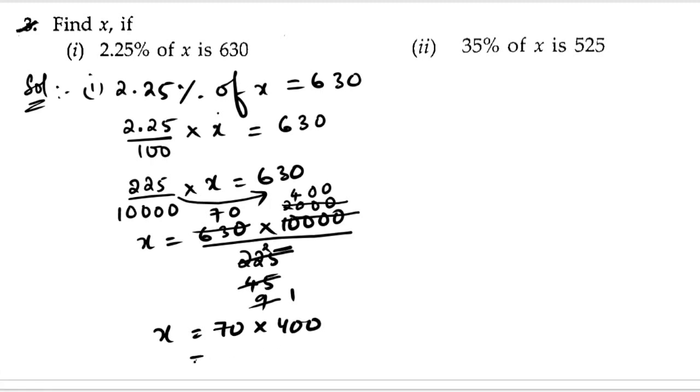Now we can multiply this. 7 fours are 28, we will get 3 zeros, 1, 2, 3. So the value of x is 28000.